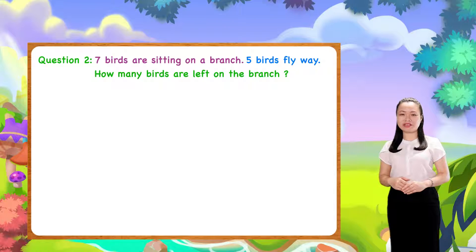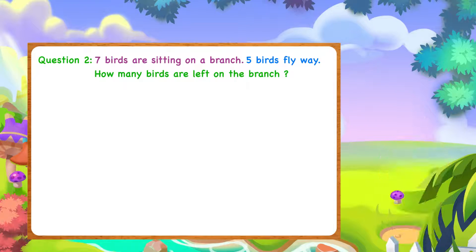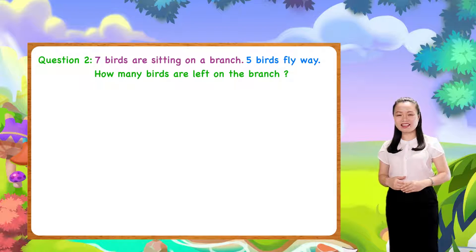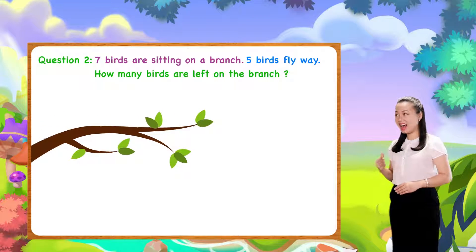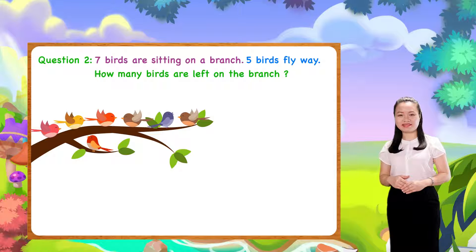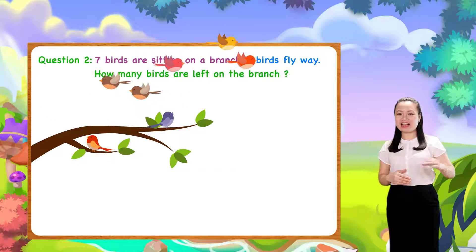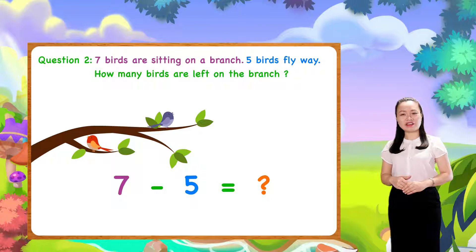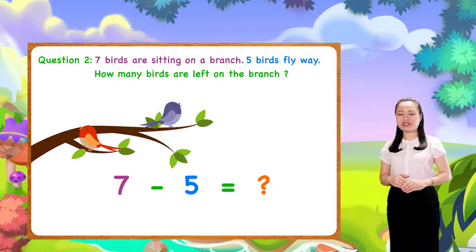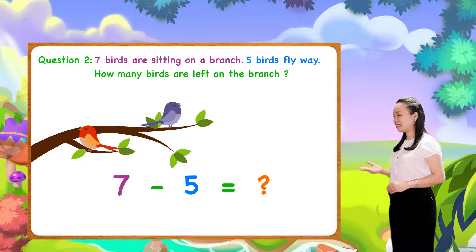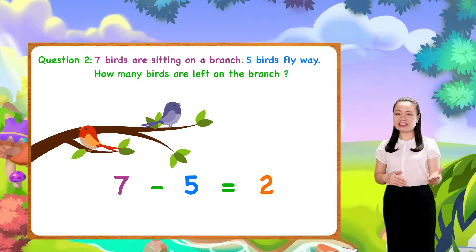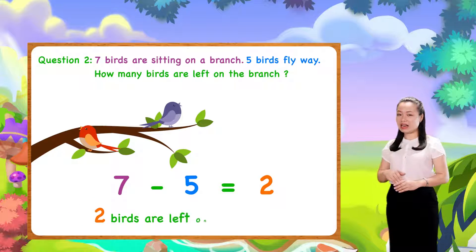I'll give you some time to find the answer by yourself. Let's find the answer together. 7 birds are sitting on the branch. 5 birds fly away. We subtract 5 from 7 to find the number of birds left on the branch. So, 7 minus 5 equals 2. We conclude. 2 birds are left on the branch.